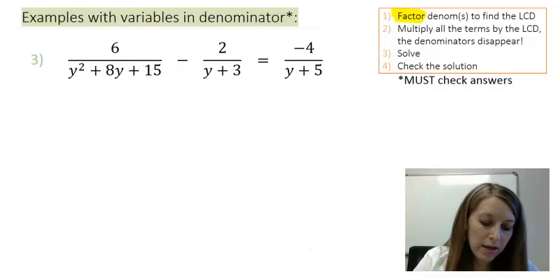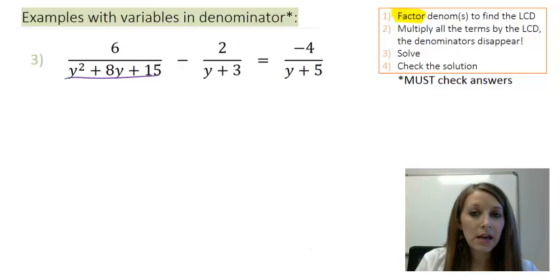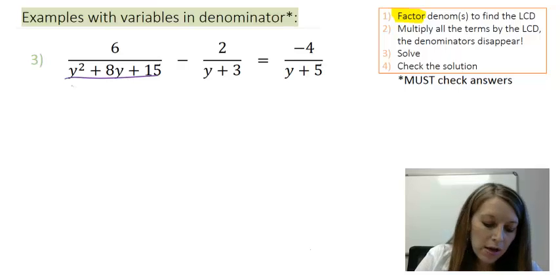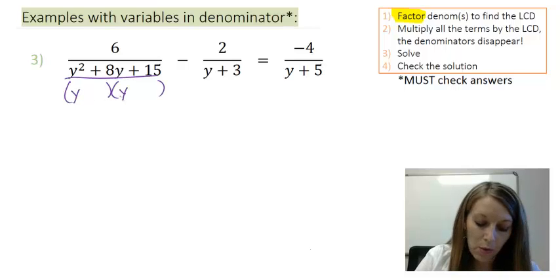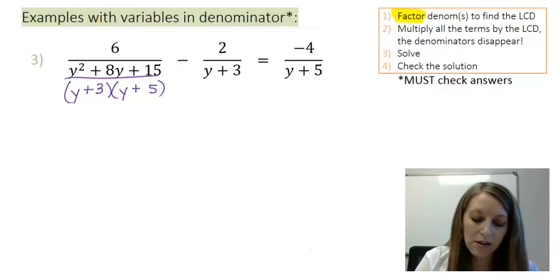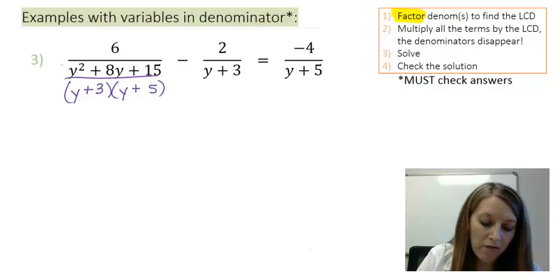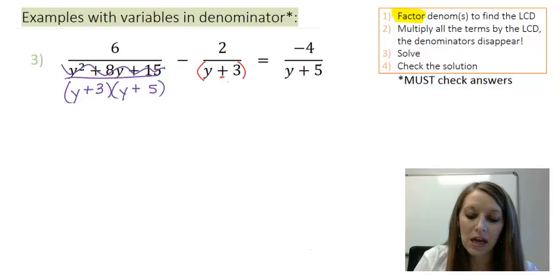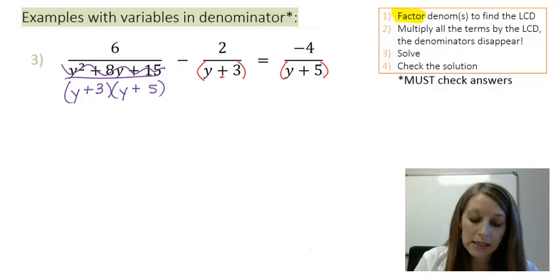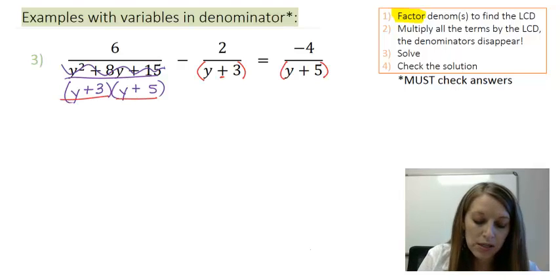The first thing I need to do is factor each of these denominators. My first denominator has three terms in descending order with no common factors, so it's a trinomial. I'll set it up as my UNFOIL process, where Y times Y gives me Y squared, 3 times 5 gives me 15, and a positive 3Y and a positive 5Y gives me my middle term of positive 8Y. In my second fraction, Y plus 3 is one unit, and in my last fraction, Y plus 5 is also one unit. So my LCD is going to be Y plus 3 times Y plus 5.